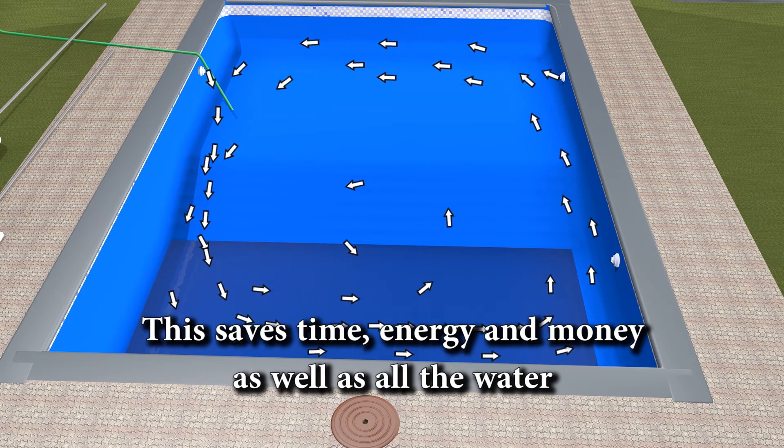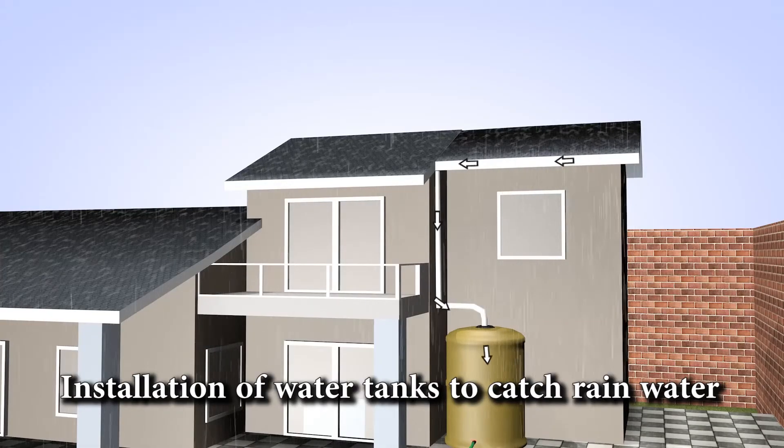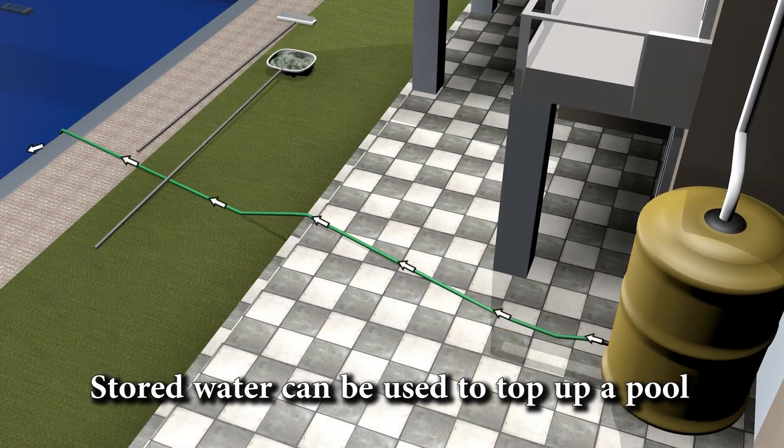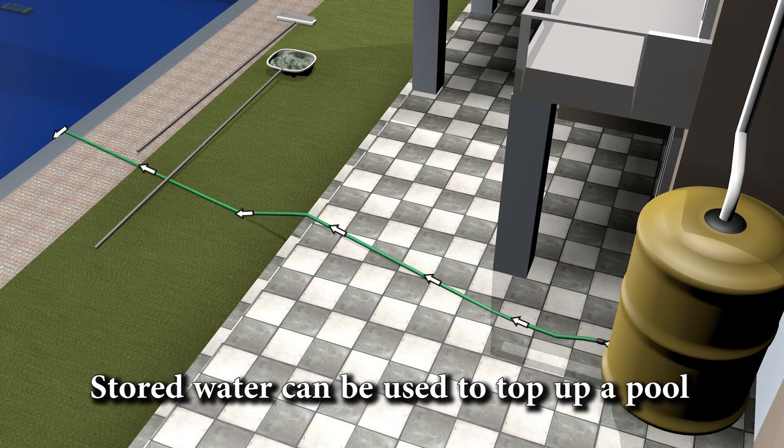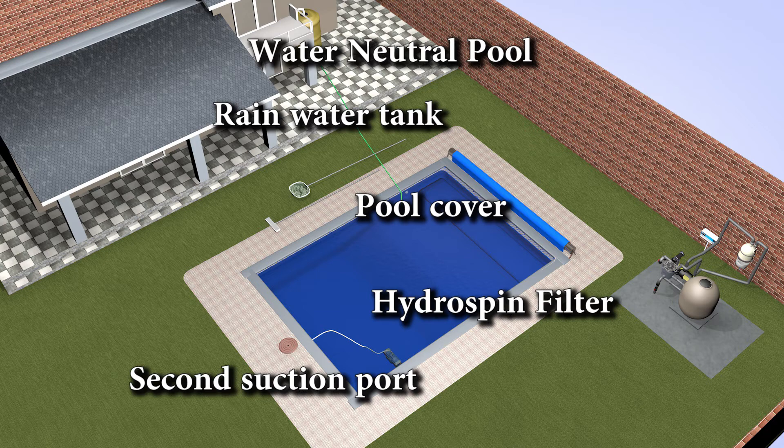This saves time, energy and money as well as the water. They recommend the installation of water collection tanks that will allow you to collect rain water and store that water. This water can be used to top up your pool if the water level drops. With these modifications a pool can become cost effective to maintain and run.